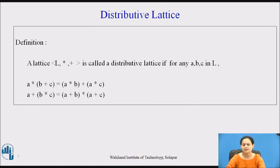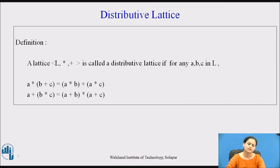To revise: the three types of a lattice are — first, a complete lattice, which is dependent upon having both lub and glb for every nonempty subset; second, a complemented lattice, where every element has at least one complement present in the same lattice; and third, a distributive lattice, which along with the earlier properties of commutativity, associativity, and absorption also holds the distributive property.